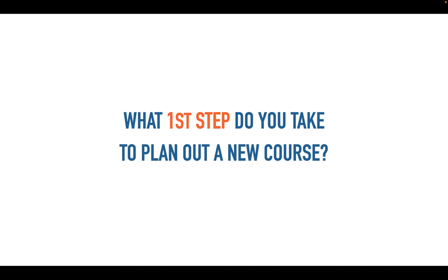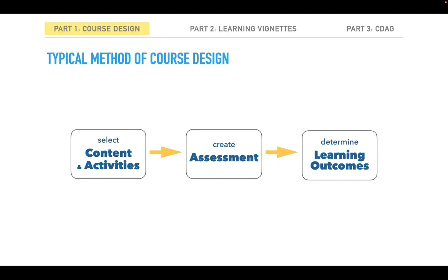The typical approach to course design — what happens most often — is that instructors will first select the content and any activities for the course. The next step is often the creation of some assessments that test students on how well they have learned that content. And finally, often only if they are asked for, instructors will write some learning outcomes for the course, that are usually based on what content is covered. So this is the typical method of course design.